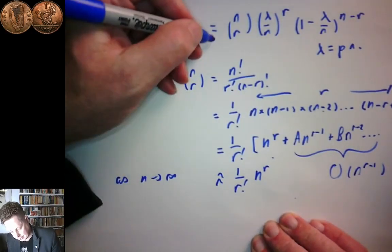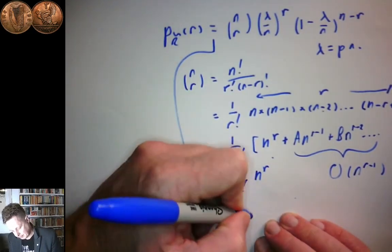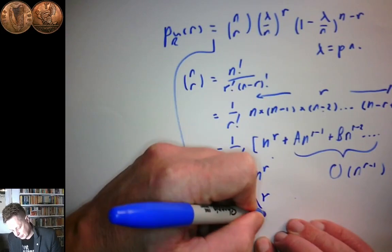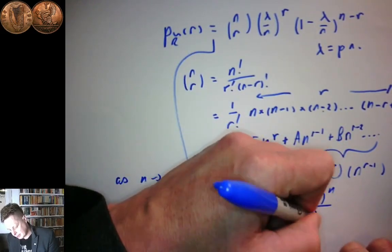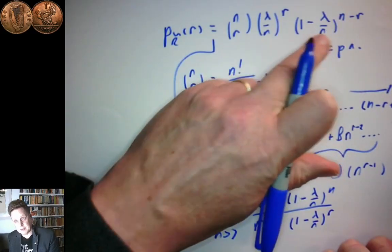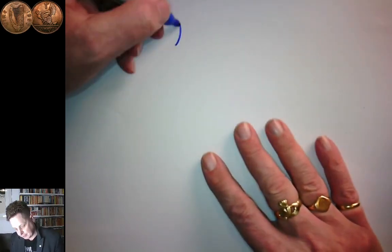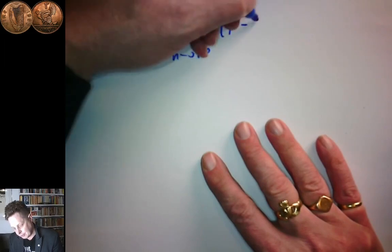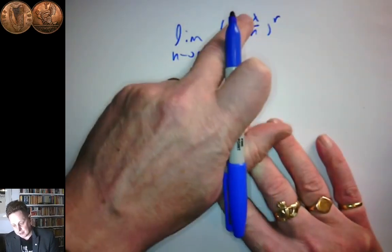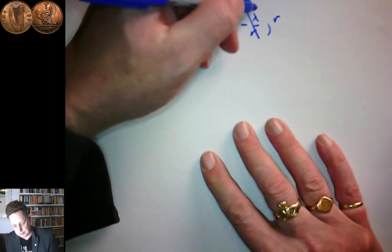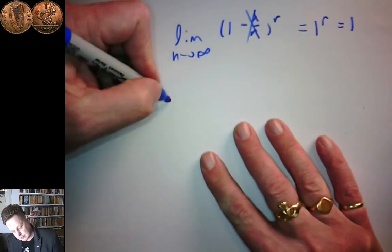So as n becomes very large, P(r) approaches (lambda^r / r!) times (1 − lambda/n)^n divided by (1 − lambda/n)^r. I've split the fraction because the fate of those two terms is quite different. The limit of (1 − lambda/n)^r as n → ∞: since we just have something divided by n with lambda finite, as n becomes very large that becomes one. So the denominator is just one.